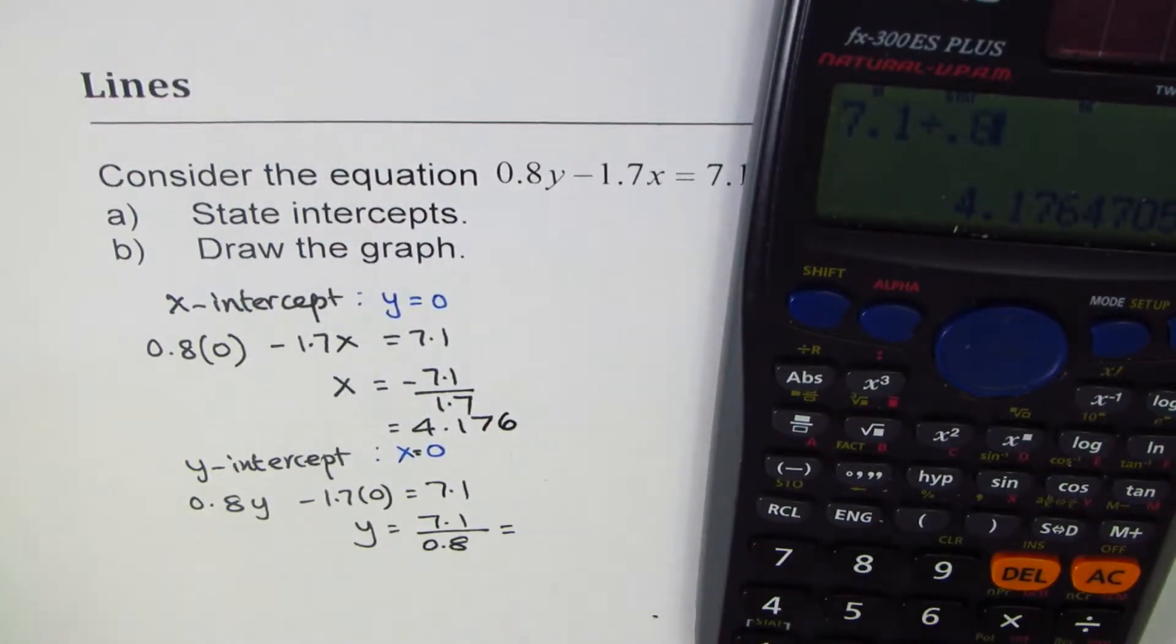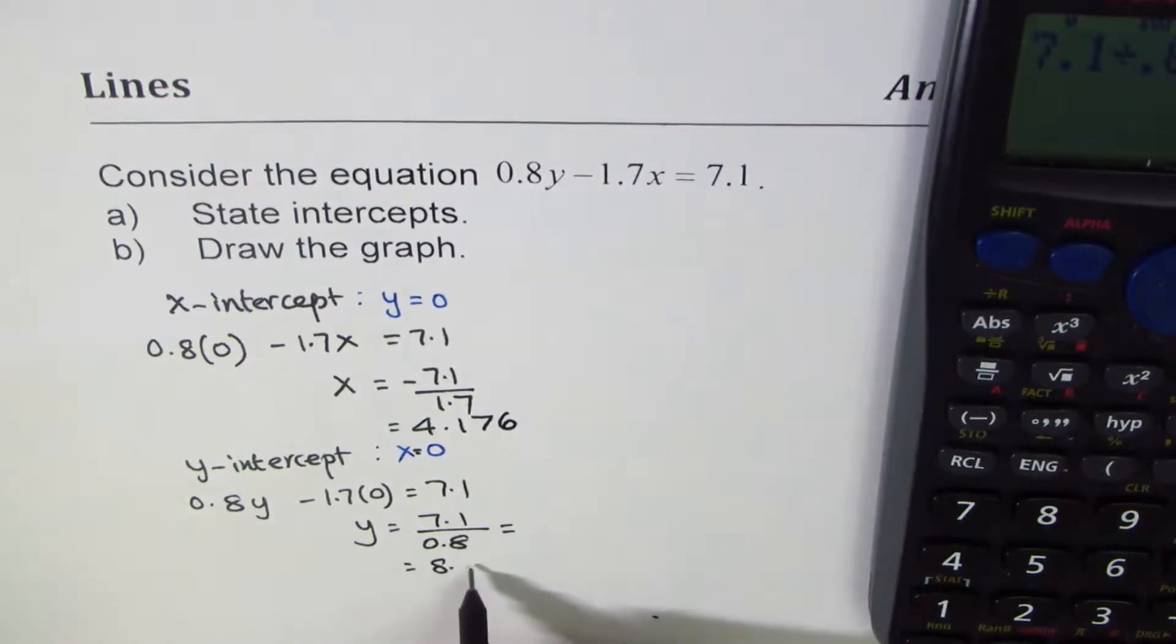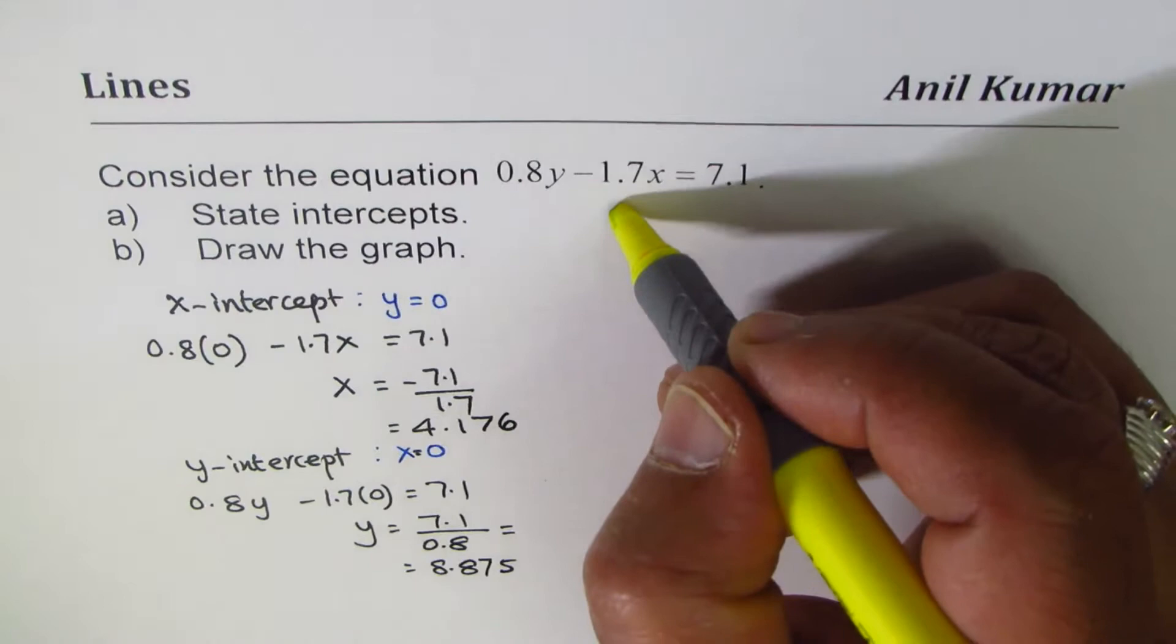That is 8.875. So we get a value of 8.875. Finding intercepts was not difficult—we found the values.